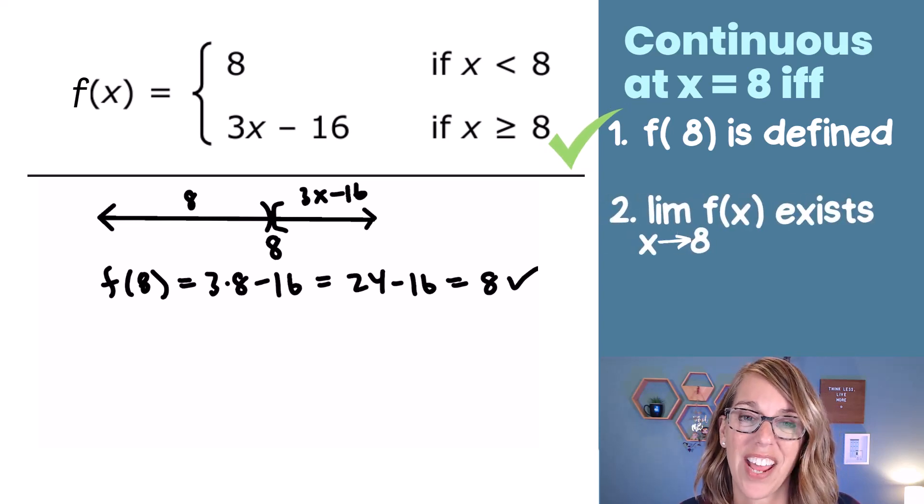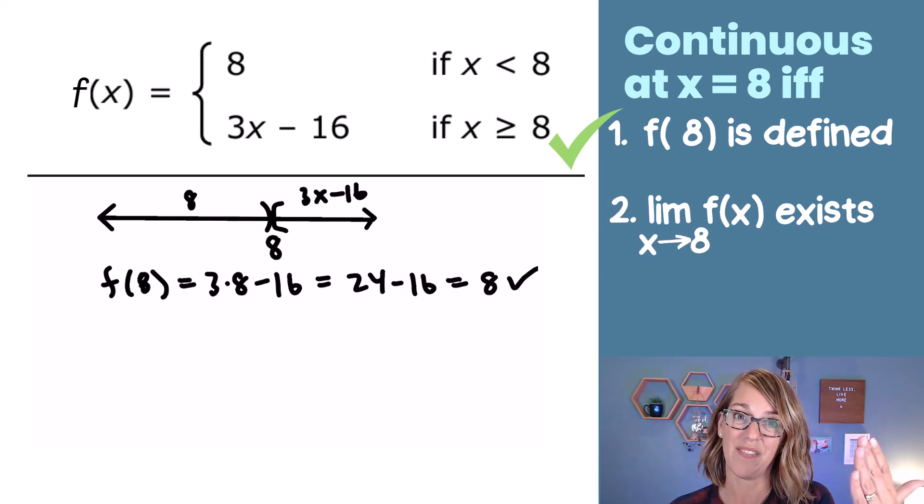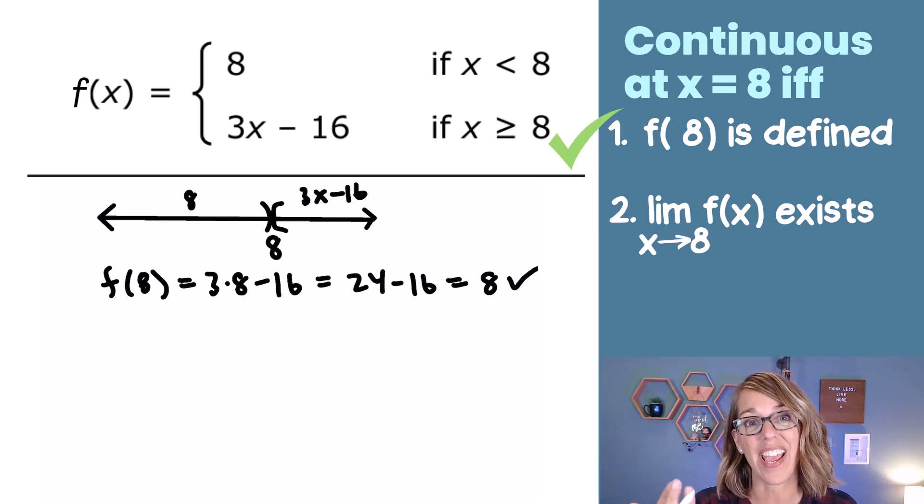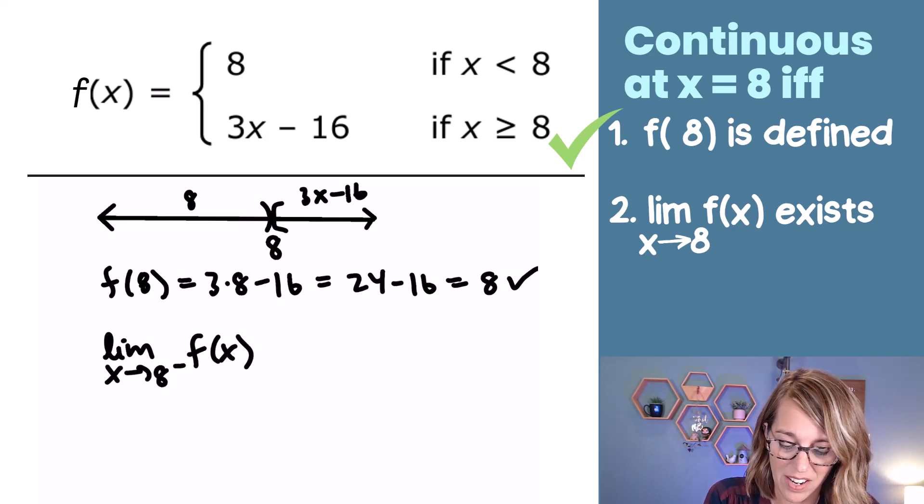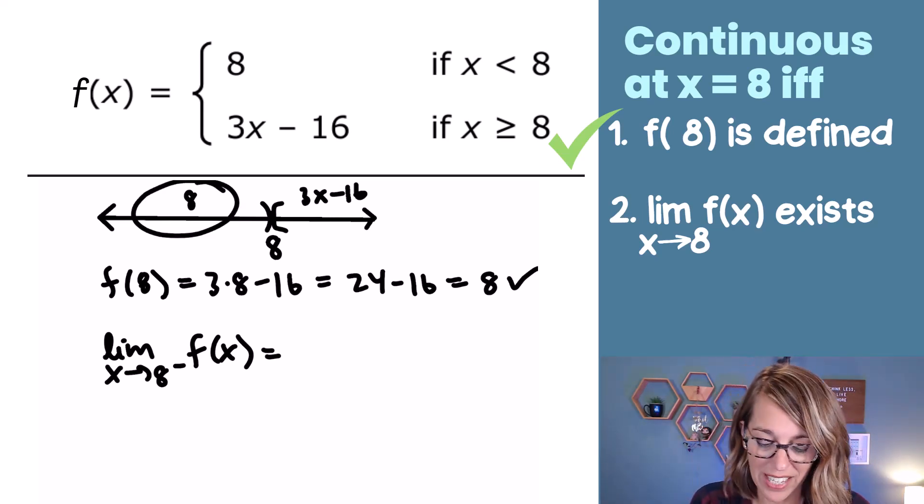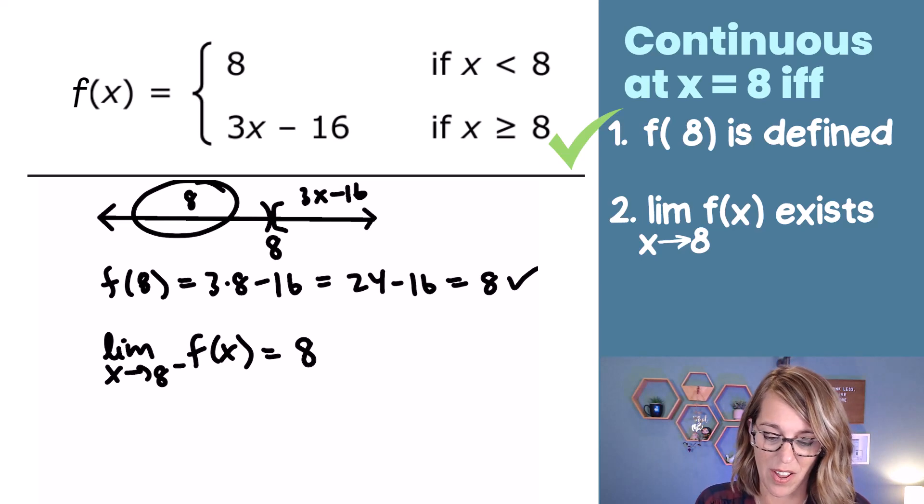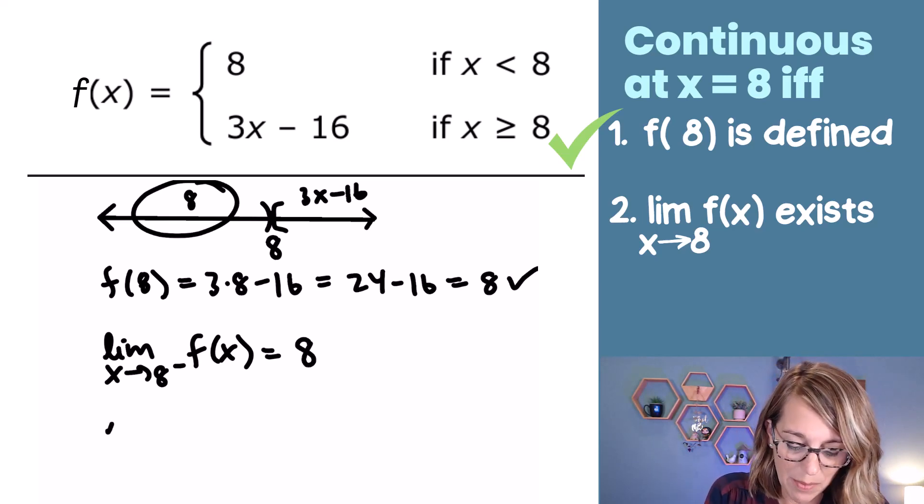Next, I want to check that limit. In order for that limit to exist, I need the same value on the left of 8 as I've got on the right hand side of 8. So if I'm doing my limits now, the limit as x approaches 8, let's go from the left of f(x). Well, anything from the left is going to be 8. So if I'm on the left of 8, I end up with the answer of 8.